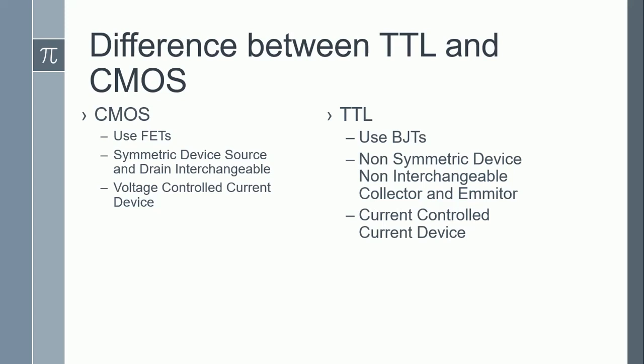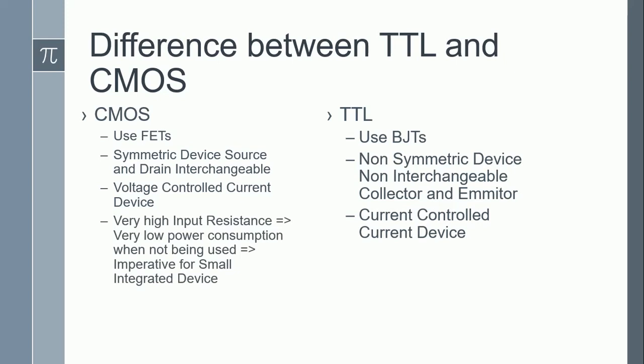The next difference is between the input resistance. CMOS technology uses FETs which have very high input resistance — IG is actually equal to zero, and that is why its input resistance is high. TTL uses BJTs where IB is essentially never zero. The high input impedance of CMOS ensures that its power consumption at idle state is much lower, making CMOS technology ideal for small integrated devices.